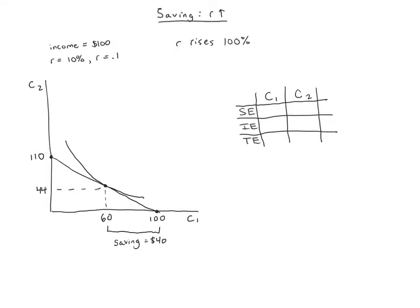In that case we'll get a new budget constraint. This point won't change, we'll still be able to consume a hundred dollars maximum in period one, but if we save we'll be able to consume our hundred dollars we saved plus the interest income which is a hundred percent of our savings, so we'll be able to consume two hundred dollars. So this budget constraint will get a lot steeper.